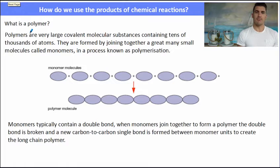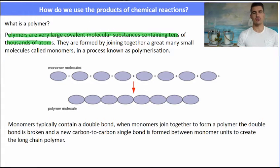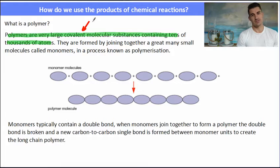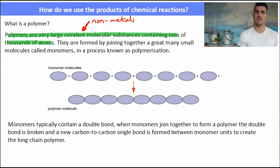What is a polymer? Polymers are large covalent molecular substances containing tens of thousands of atoms, joined together from many small molecules called monomers in a process called polymerization. Polymers are mainly made out of carbon, hydrogen, oxygen and a few other compounds. So they're non-metals and they're formed from covalent bonds.